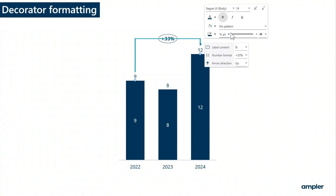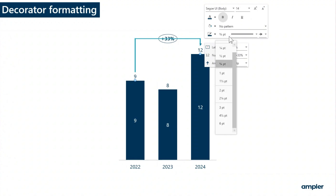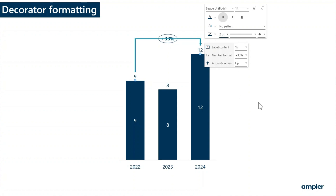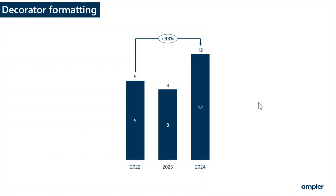From the format menu, you can change the font formatting, the fill color formatting and the outline. In this case, the line is selected and I update the thickness of the line style.